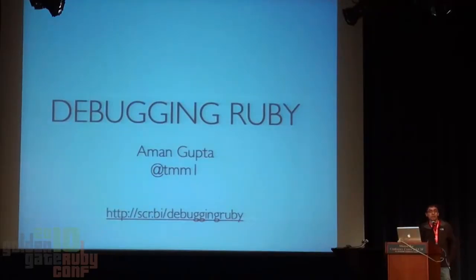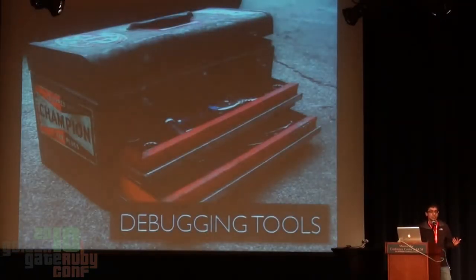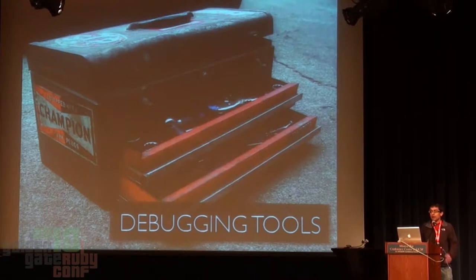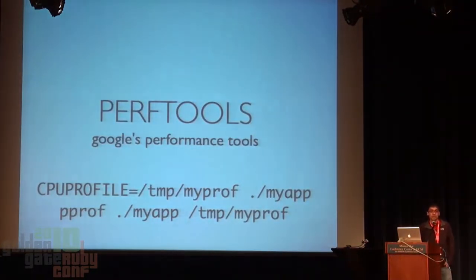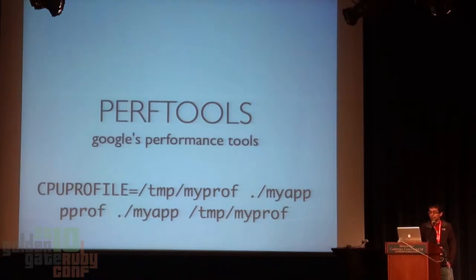Next up, Aman Gupta talking about perftools.rb. My name is Aman, I go by TMM1 on Twitter. I did a talk called Debugging Ruby at Lone Star a couple weeks ago. I'm going to do a five-minute version of that talk. The talk is about debugging tools you can use to figure out what's going on in your production systems, and I'm going to focus on my favorite tool: perftools. Perftools is a CPU profiler that Google wrote and uses.